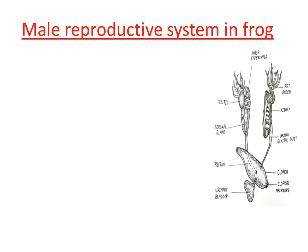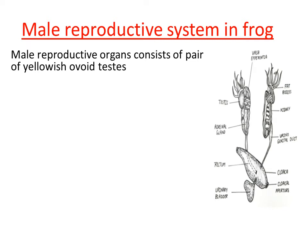Let us discuss about the male reproductive system in frog. The male reproductive system consists of certain organs that help in the formation of sperms. The main organ present in the male reproductive system is a pair of testes. These pair of organs are ovoid in shape and yellowish in color.